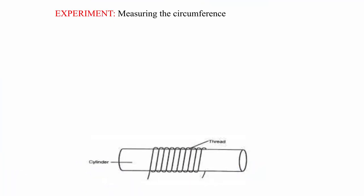Experiment: measuring the circumference of a cylinder using a thread. Apparatus: a cylinder, a thread, and a meter rule.